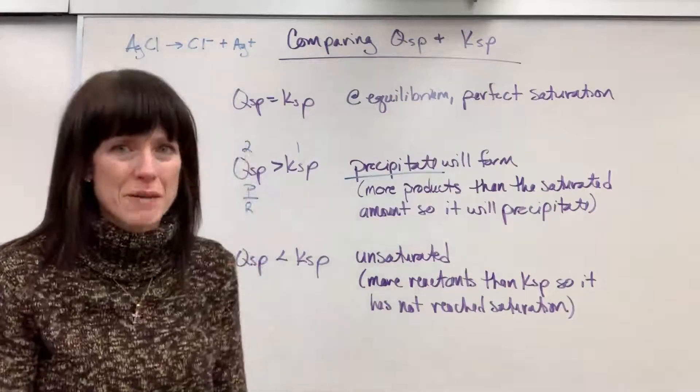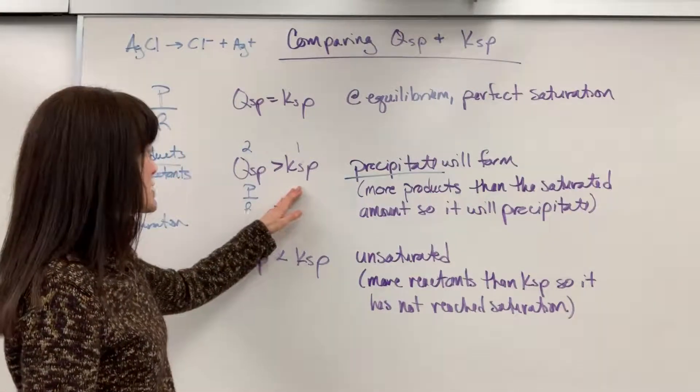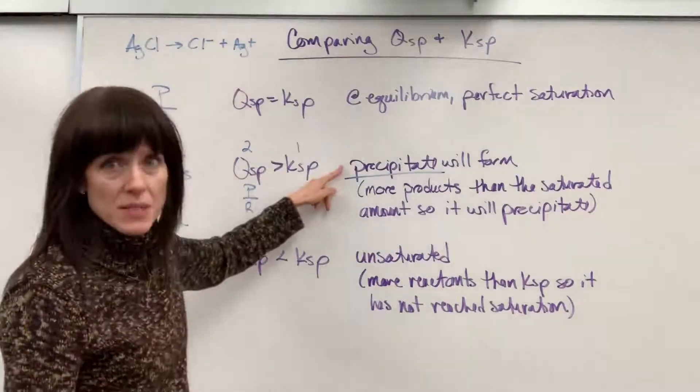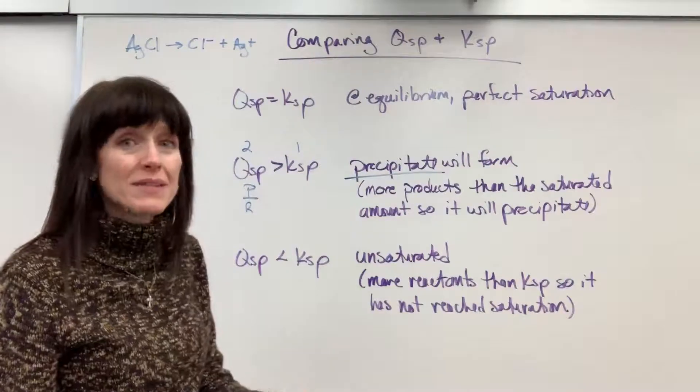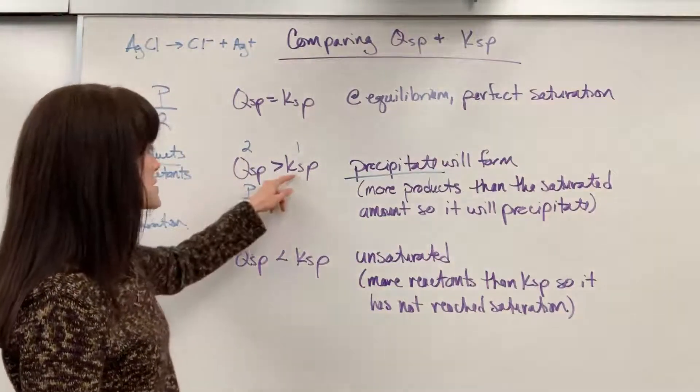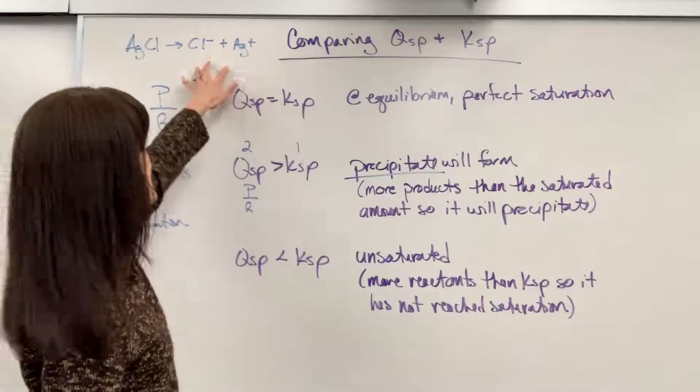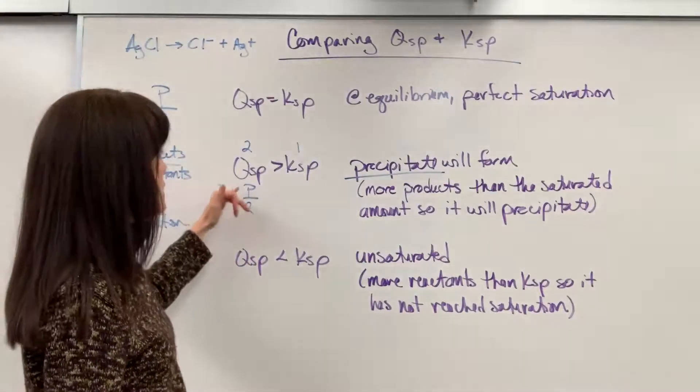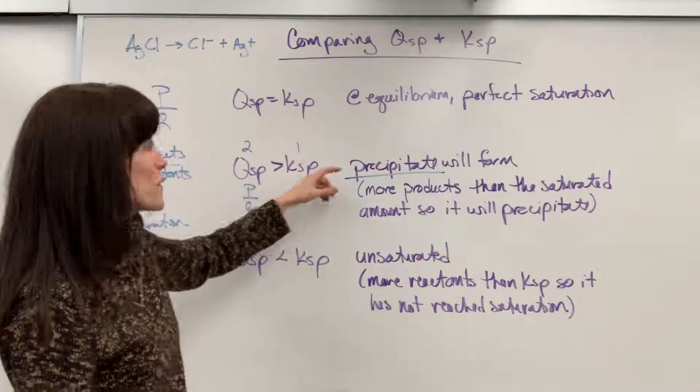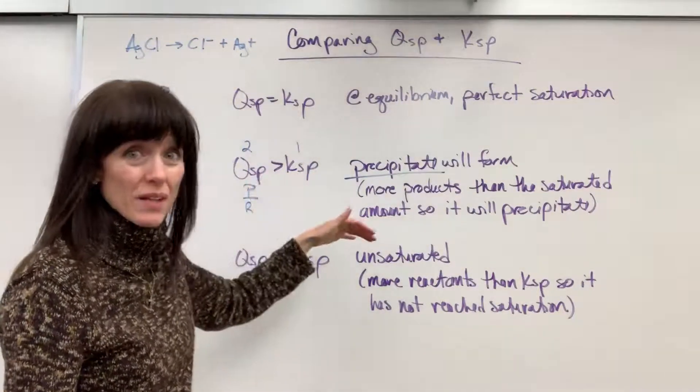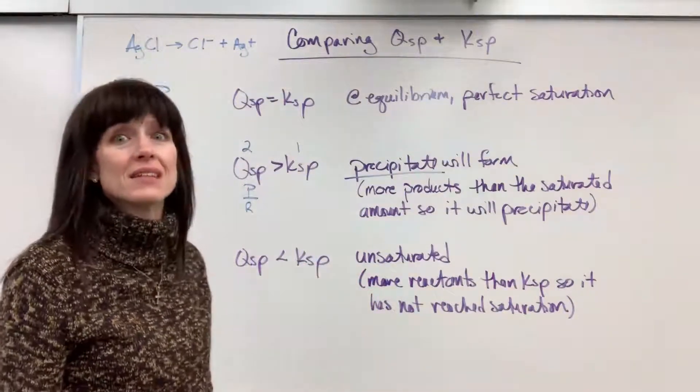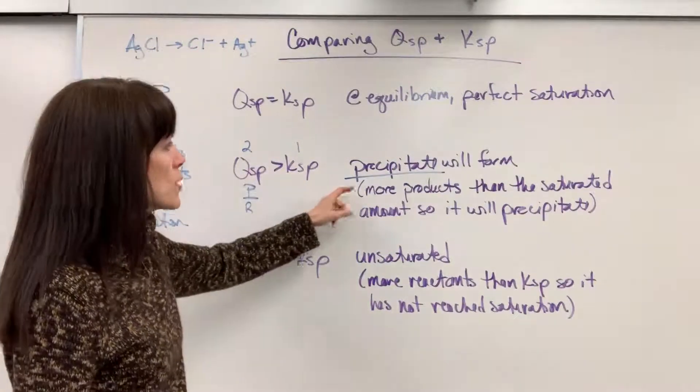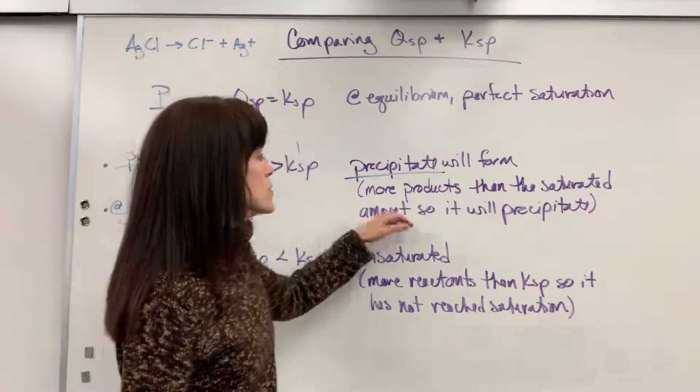So I want to say that one more time. If QSP is greater than KSP, so it would look like we have more products than reactants, it forms a precipitate because here's what happens. Here's the reality. You can't have more products than the KSP because this is a saturated maximum amount that can dissolve. So if you have more products, that means it will become saturated. And then the rest that should form products actually just sits there and doesn't react. It can't break apart. So it forms a precipitate. And notice what I put right here, more products than the saturated amount. So it will precipitate. It just sits there.